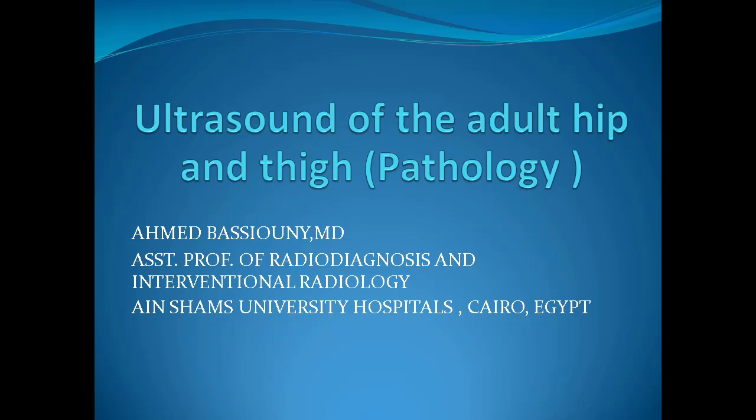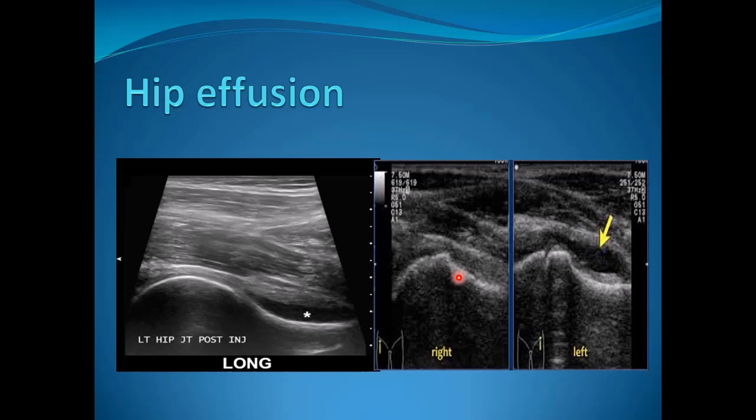Hello everybody, today we're going to discuss the second part of the hip and thigh ultrasound in adults regarding the pathology. The most common pathology seen in hip ultrasound is joint effusion.